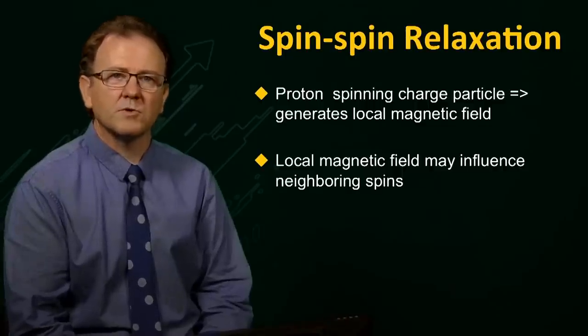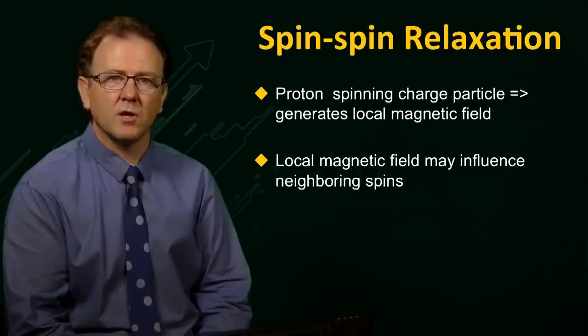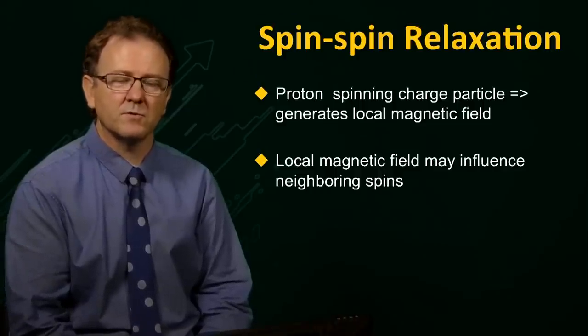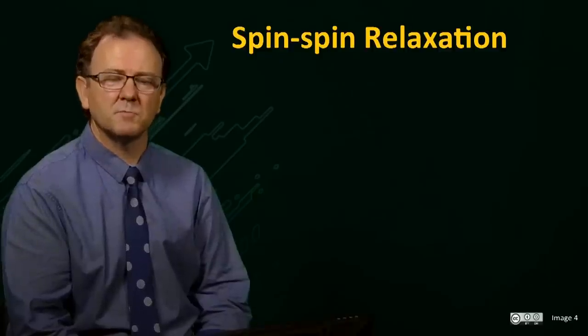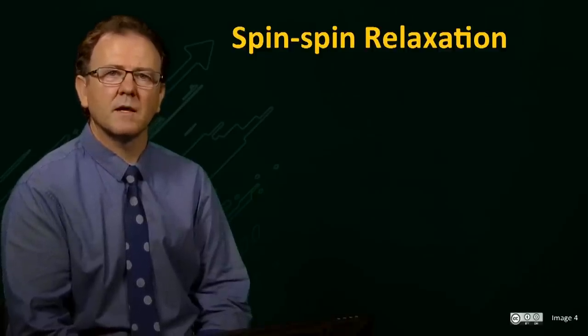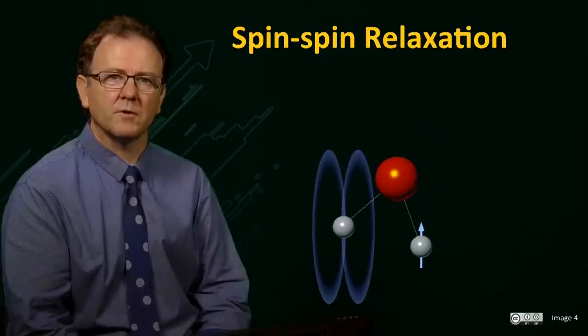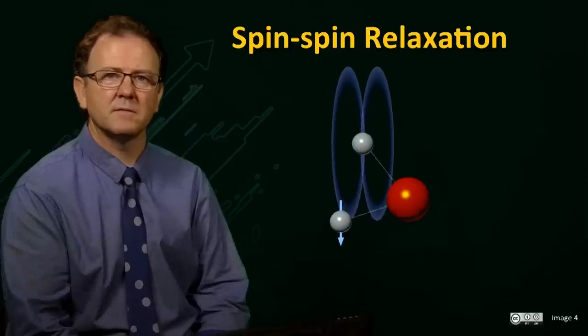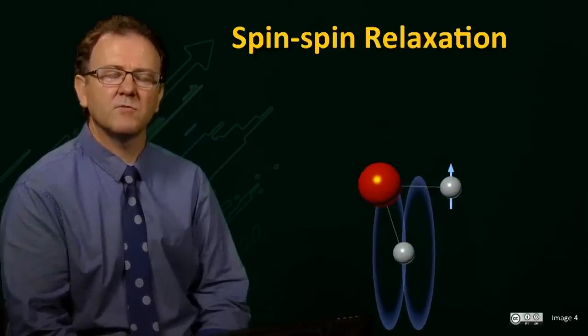Since water molecules are freely tumbling and rotating, this motion causes the local field at the second proton to fluctuate. This animation shows this spin-spin interaction. As the molecule tumbles, the local field at one proton passes through the other spin. The field changes at the second spin depends on the rate of molecular tumbling.